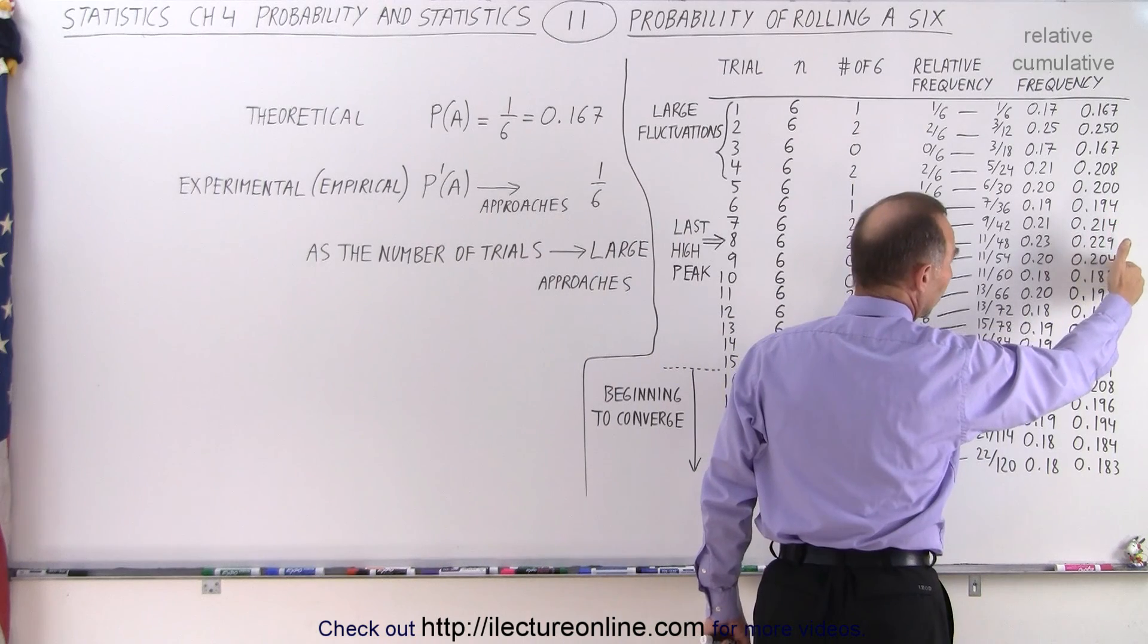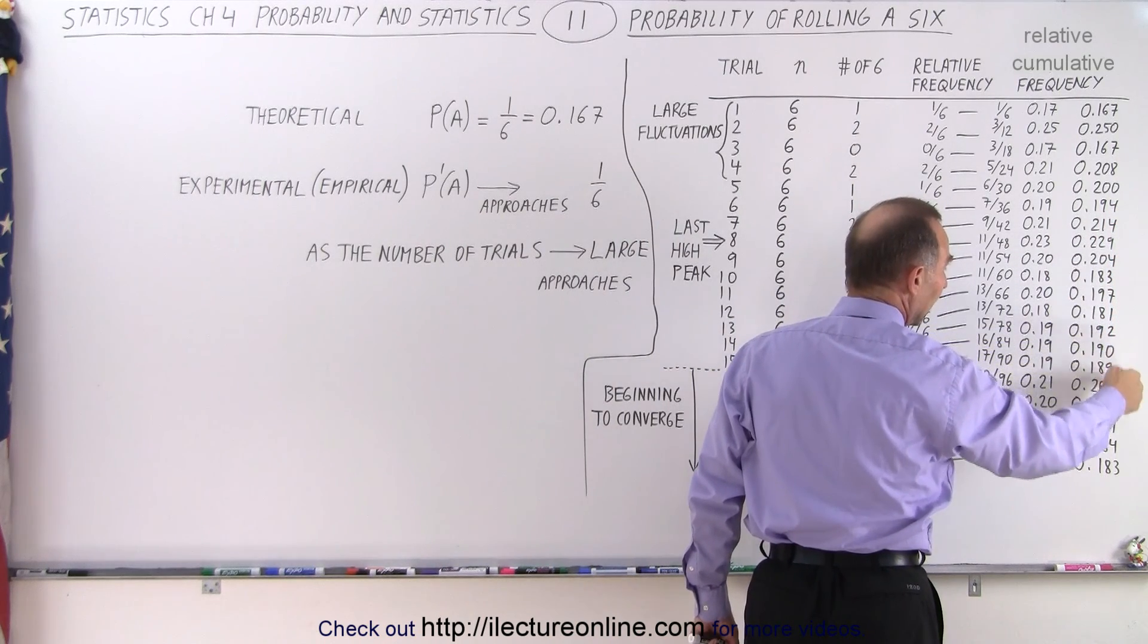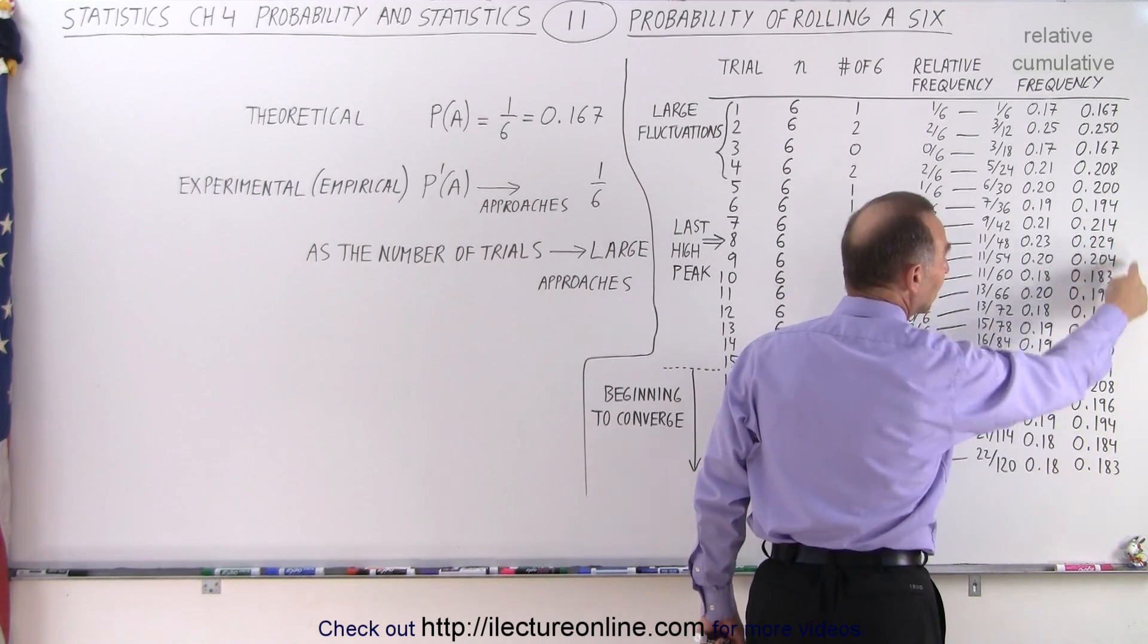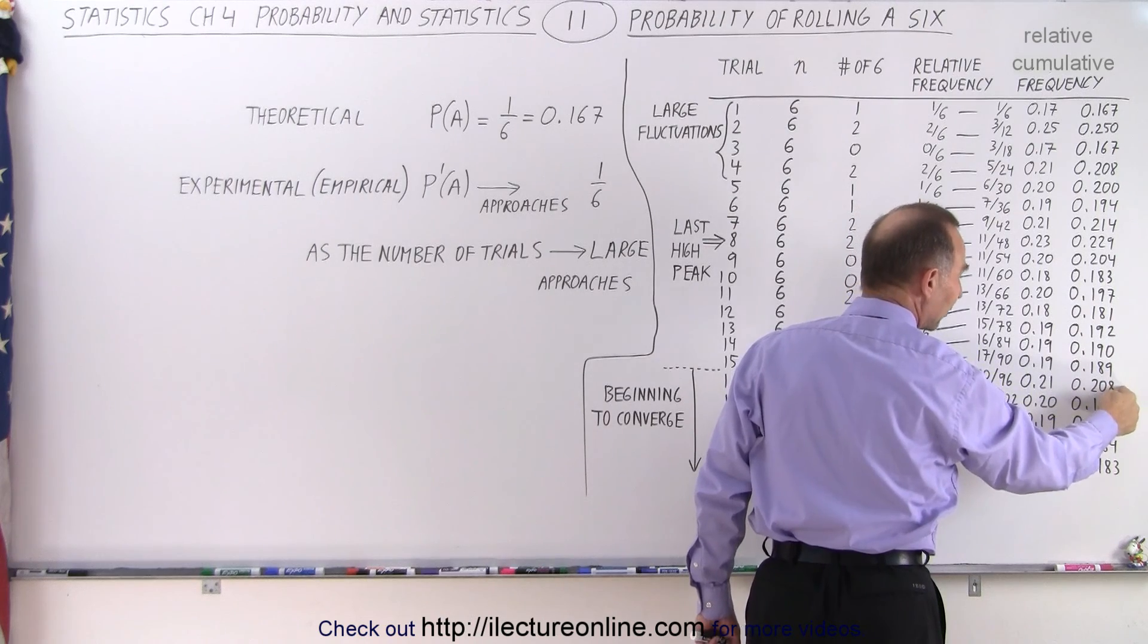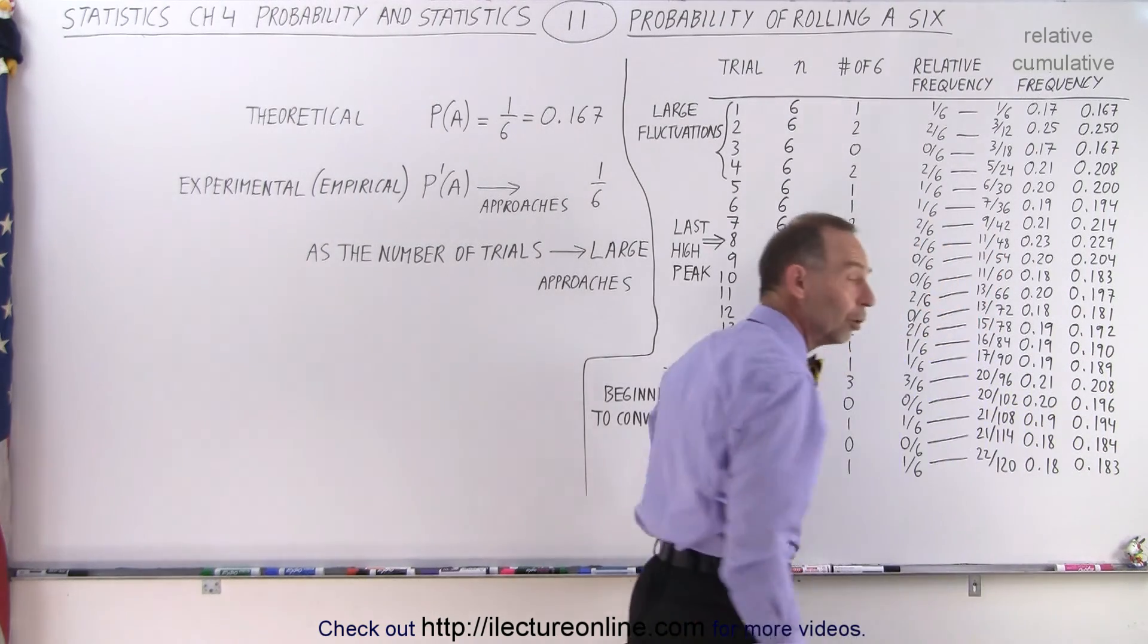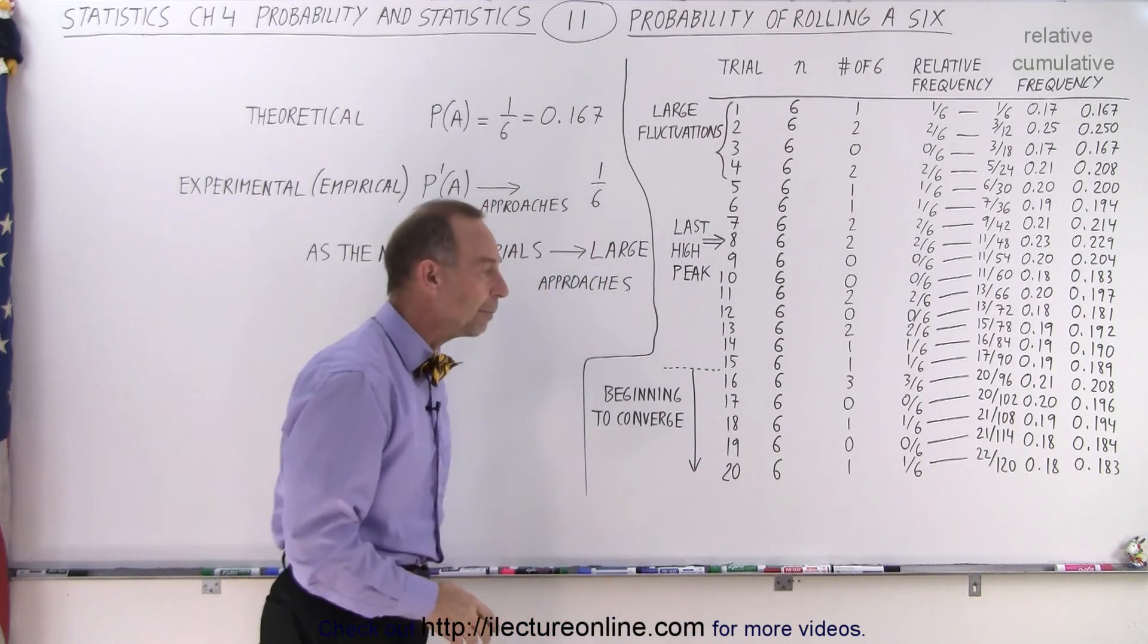Then notice we started getting closer, we started moving up again, closer. Again, we hit kind of a high, but not as high as over here. And then from that valley on, we began to get closer and closer to that theoretical probability.